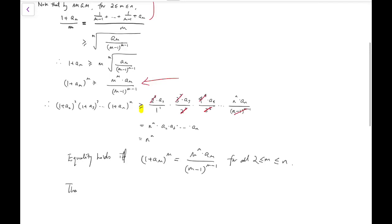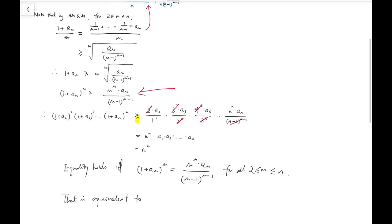Which is that (1+aₘ)^m equals m^m · aₘ/(m-1)^(m-1) for all m between 2 and n. That is equivalent to this step. This line also has inequality for the first line of the AM-GM inequality. And this can only be achieved when aₘ equals 1/(m-1) for all m between 2 and n.